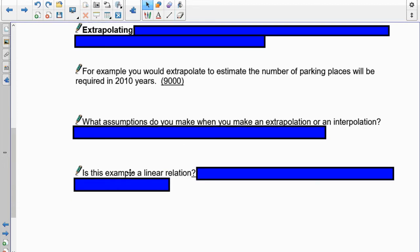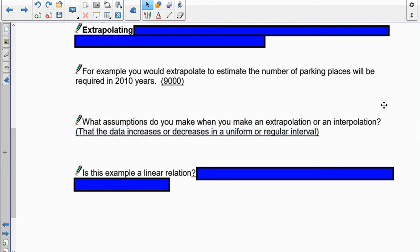Now, the thing about extrapolations and interpolations is you have to make some assumptions that are going to take place. Now, for us in grade 9, the biggest assumption we have to make is that the data is going to increase or decrease in a uniform or regular interval. Because we have to have linear data. In grade 10, 11, and 12, you're going to be introduced to the different types of graphs where we have curves.